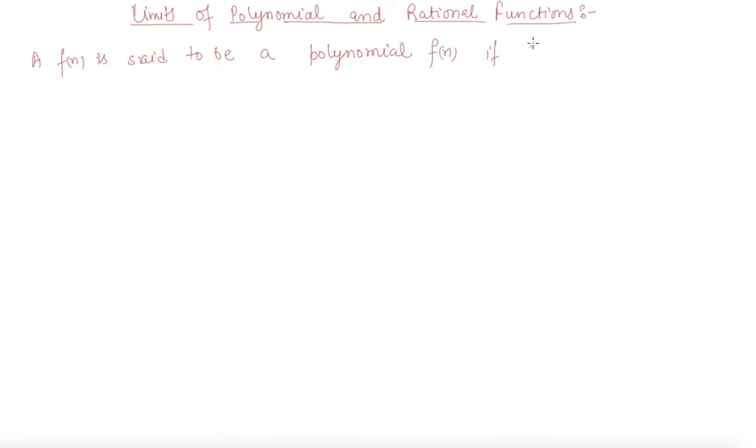A function is said to be a polynomial function if f(x) is zero function or if f(x) equals a₀ plus a₁x plus a₂x² up to aₙxⁿ.